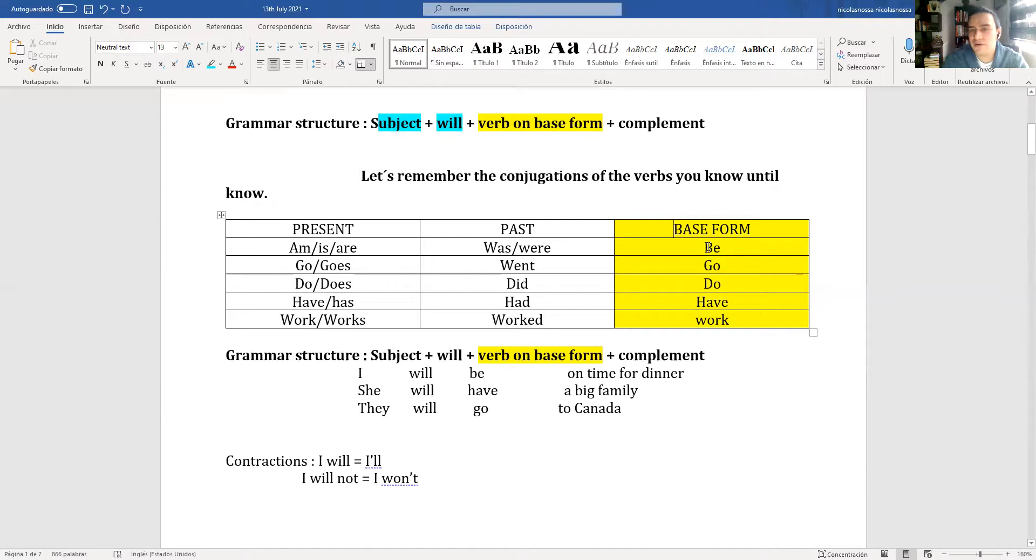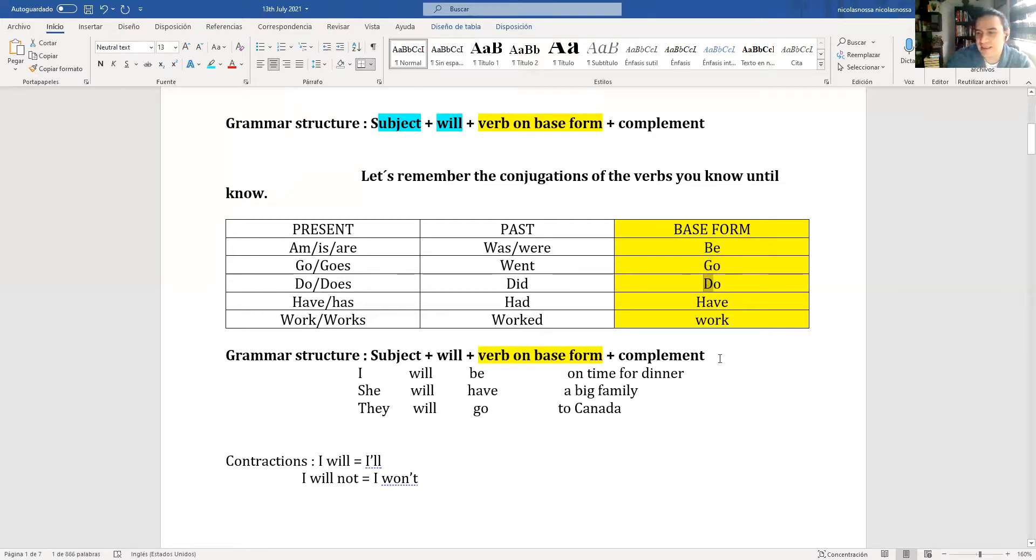Examples: I will be on time for dinner. Subject I, the modal will, my verb in base form be, and the complement on time for dinner. Estaré, yo estaré a tiempo para la cena. She will have a big family. Ella tendrá una gran familia. They will go to Canada. Ellos irán a Canadá.